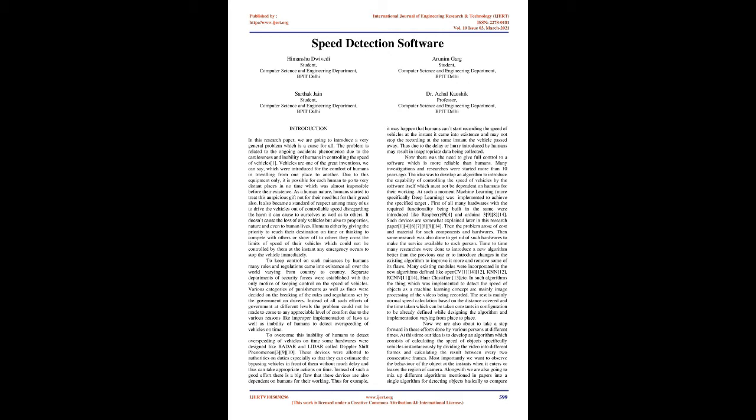Instead of all such efforts of government at different levels, the problem could not be brought to any appreciable level of comfort due to various reasons like improper implementation of laws as well as inability of humans to detect over-speeding of vehicles on time. To overcome this inability, some hardware devices were designed like radar and lidar, called the Doppler shift phenomenon. These devices were allotted to authorities on duty so that they can estimate the speed of bypassing vehicles without much delay and thus take appropriate actions on time. However, a big flaw remains: these devices are also dependent on humans for their working.